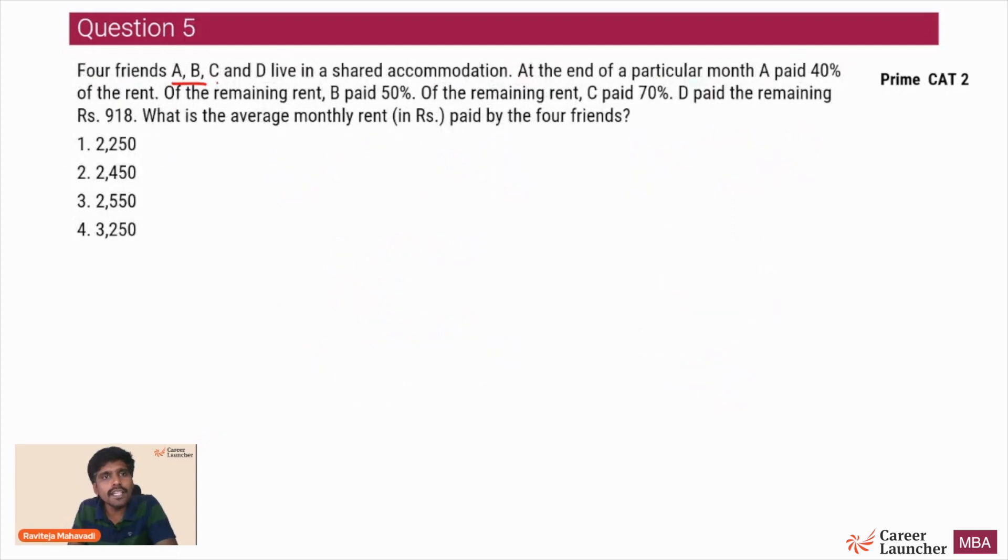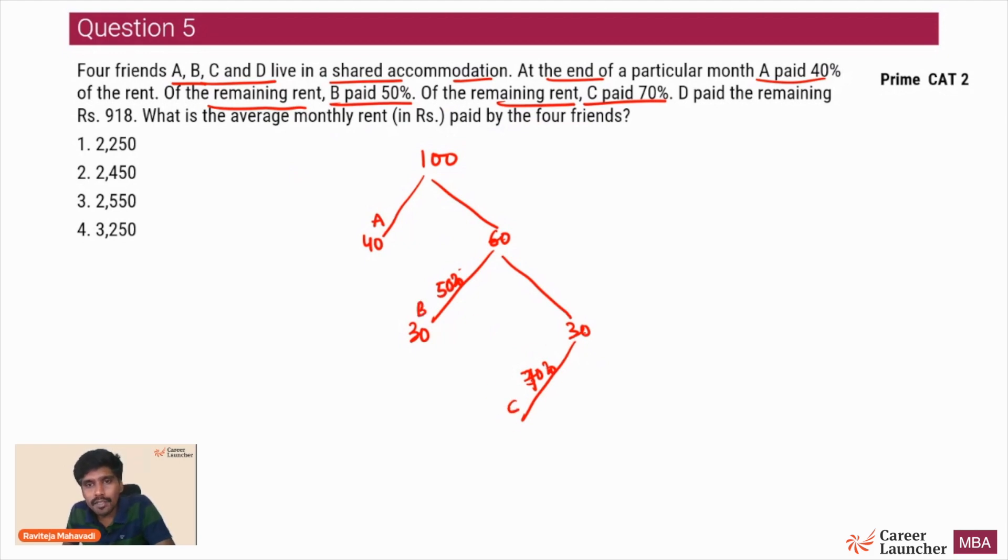Question 5. Four friends A, B, C and D live in a shared accommodation. At the end of the particular month, A paid 40% of the rent. If 100 rupees was the rent, A will pay 40. How much is remaining? 60 is remaining. Of the remaining rent, B is paying 50%. B is going to pay 50% of the remaining - 50% of 60, half of 60 is 30. So that means another 30 is remaining. Of the remaining, C paid 70%. Now out of this 30 that is remaining, 70% is what C will pay. So C will pay 70% of 30, which is 21. That means what is remaining is 9.